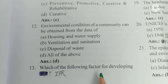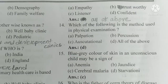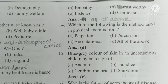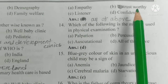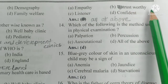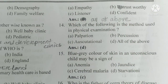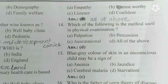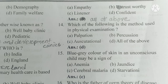Question number 13. Which of the following are factors for developing interpersonal relationships (IPR)? Options: A) Empathy, B) trustworthy, C) listener, D) confident. The answer is all of the above. These factors help to develop IPR.